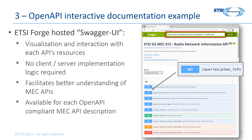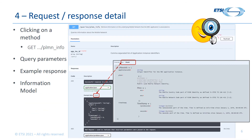The GET PLMN information endpoint is an example that can be used to query the public land mobile network information associated with an application instance — i.e., its mobile network identity information. Digging deeper, the GET PLMN info query can be clicked, which expands out the related information. First, the parameters are listed, including any query parameters — in this case just the application instance ID. In addition, the responses are provided, so in this instance there is a 200 OK response.